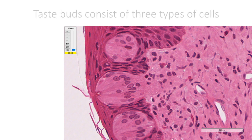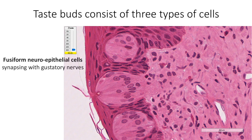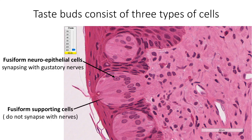Taste buds contain three types of cells: fusiform neuroepithelial cells synapsing with gustatory nerves; fusiform supporting cells; and basal stem cells which replenish the other two kinds. Taste sensation from the anterior two-thirds of the tongue is carried by the chorda tympani branch of the facial nerve. Taste sensation from the posterior one-third and circumvallate papillae is carried by branches of the glossopharyngeal nerve, while taste from the posteriormost part is carried via the internal laryngeal branch of the vagus nerve.